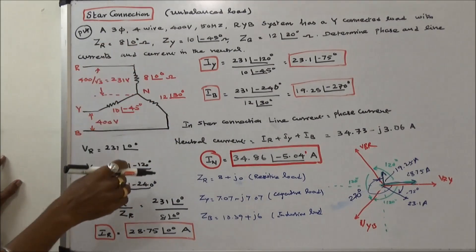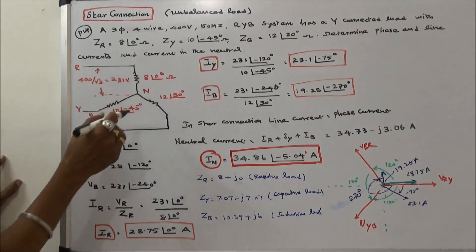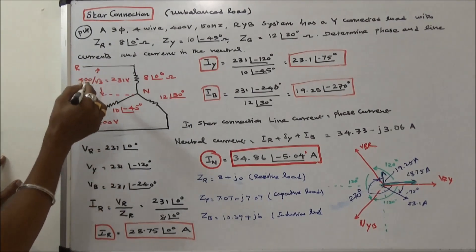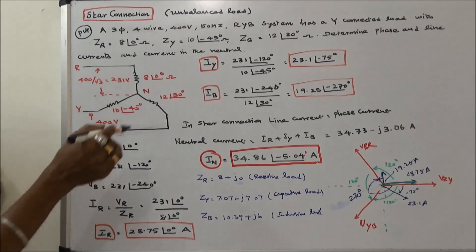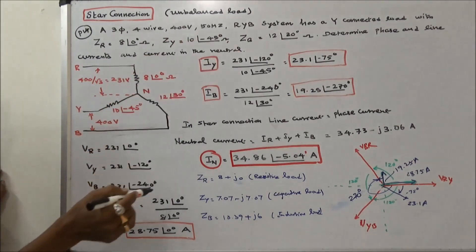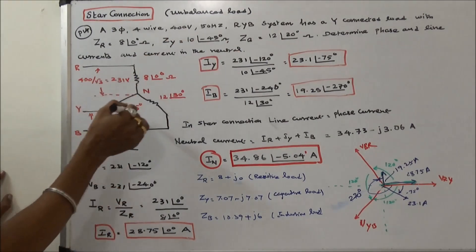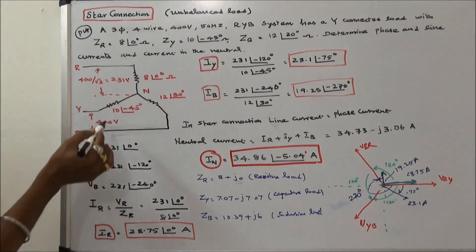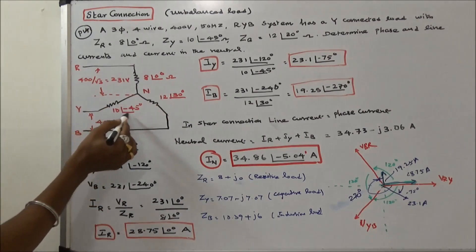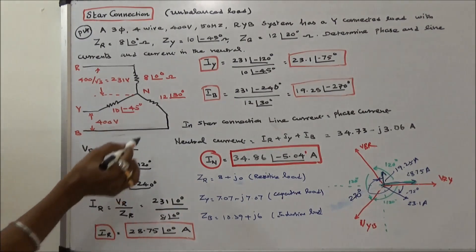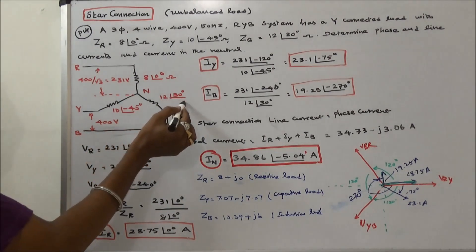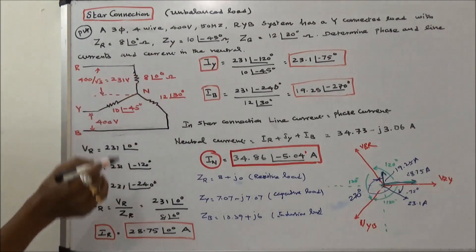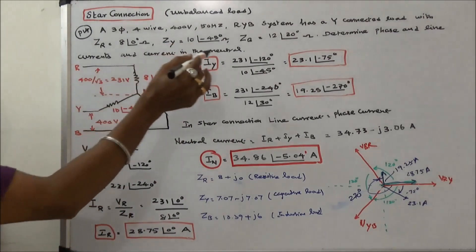The first problem: a 3-phase 4-wire 400 volts 50 hertz phase sequence RYB system has a star connected load with ZR equal to 8 angle 0 degrees, ZY equal to 10 angle minus 45 degrees, ZB equal to 12 angle 30 degrees. Determine the phase and line currents and the current in the neutral.